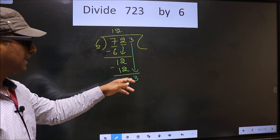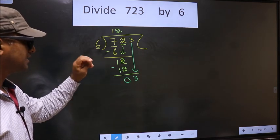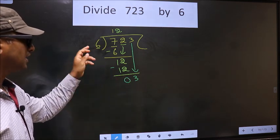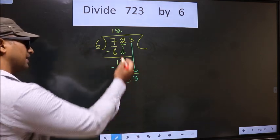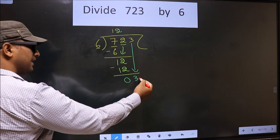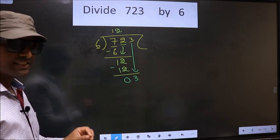Here we have 3, here 6. 3 is smaller than 6. So what many do is they put a dot and take 0 here, which is wrong.